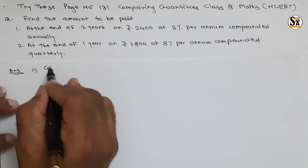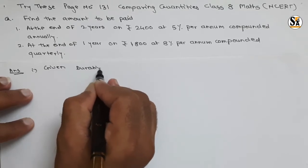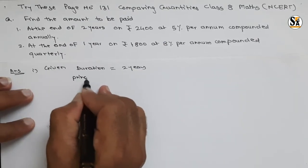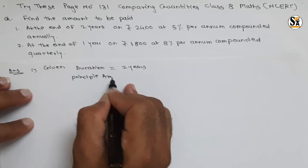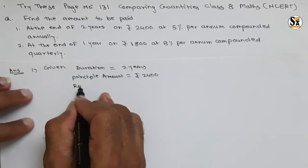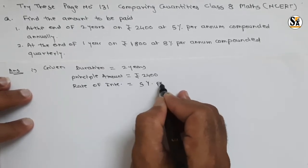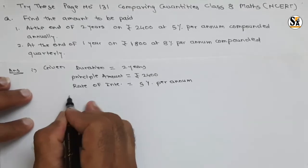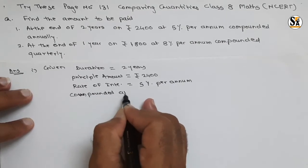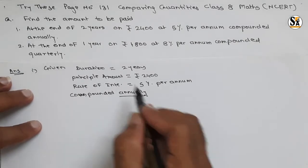Solution for the first one. What is the given data? Total duration is equal to two years. Principal amount is equal to rupees 2400. Rate of interest is equal to five percent per annum - that 'per annum' is important. And it is compounded annually.